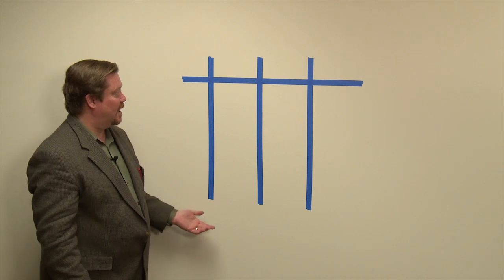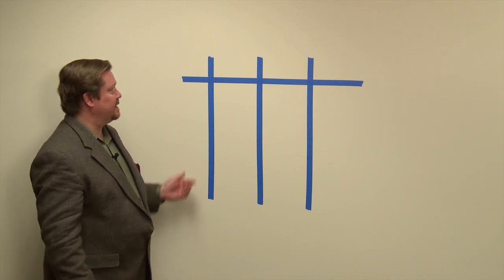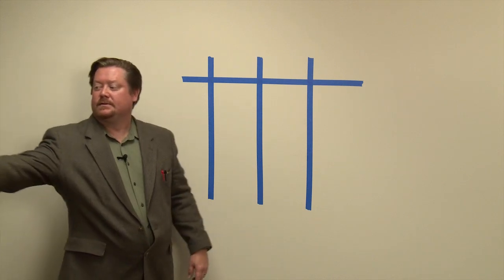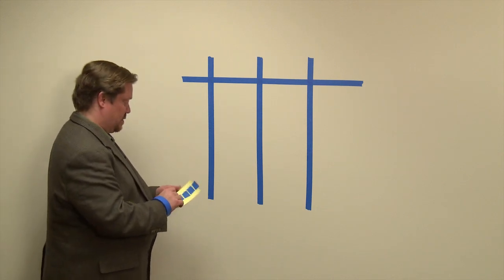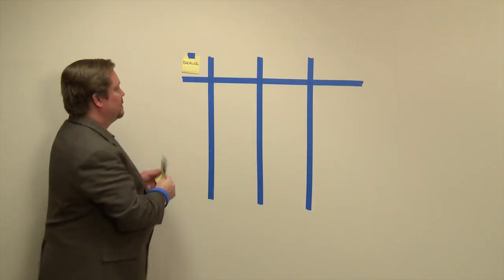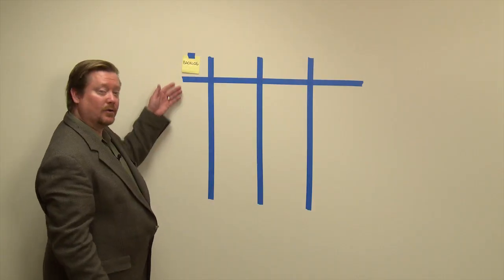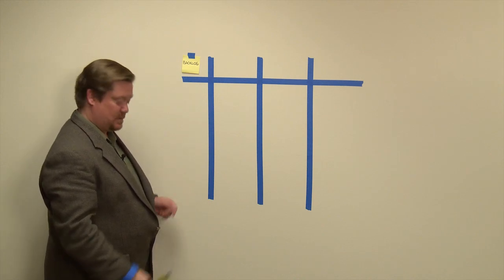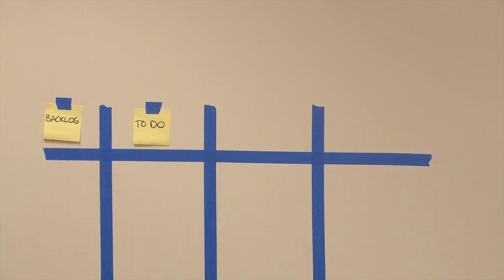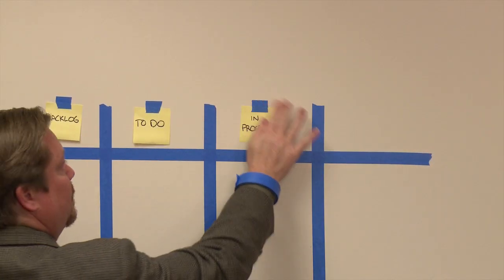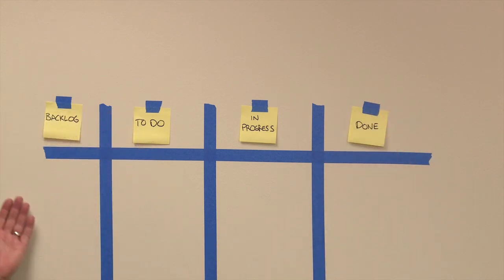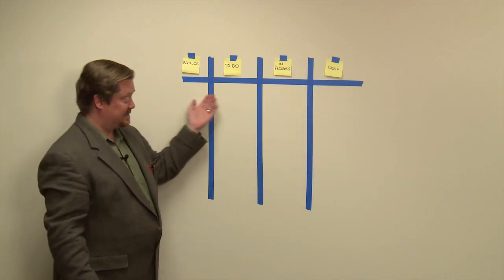Now you've created your first Kanban board and you need to label each of the column states. The first column is your backlog — this is your master backlog for the project. Highest priority items go high and lower priority items go low. Next column is the to-do column, then the in-progress column, and then the done column. This is the simplest Kanban board to implement — it shows each of the statuses.